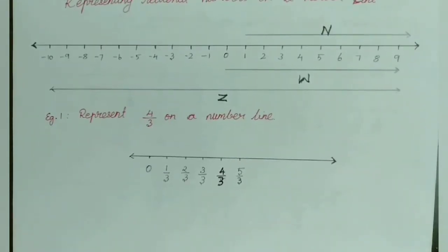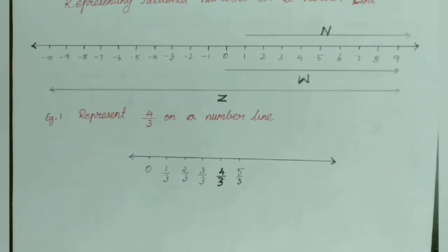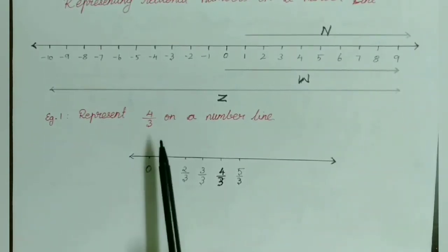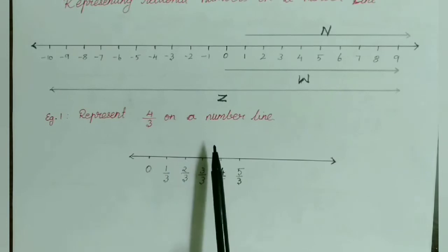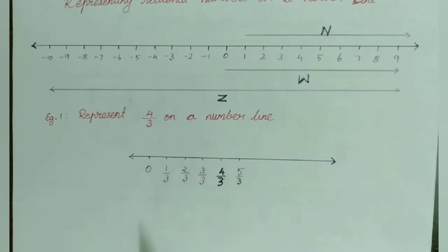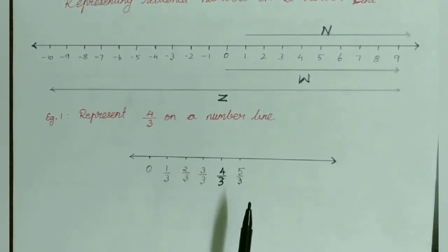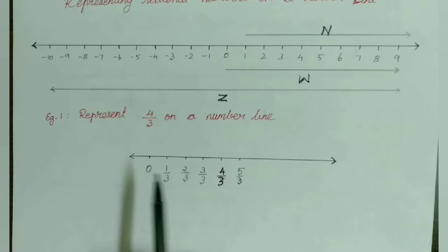Now let us represent a rational number on a number line. For that, let us take an example: represent 4 by 3 on a number line. To represent 4/3 on a number line, let us draw a number line starting from 0.